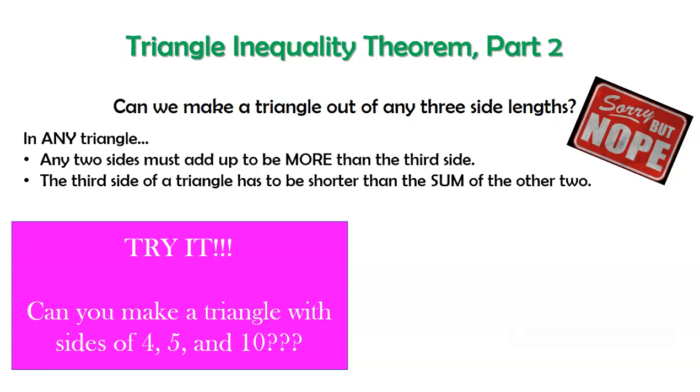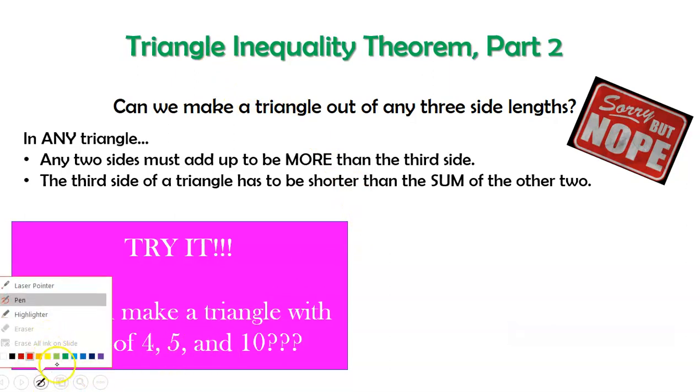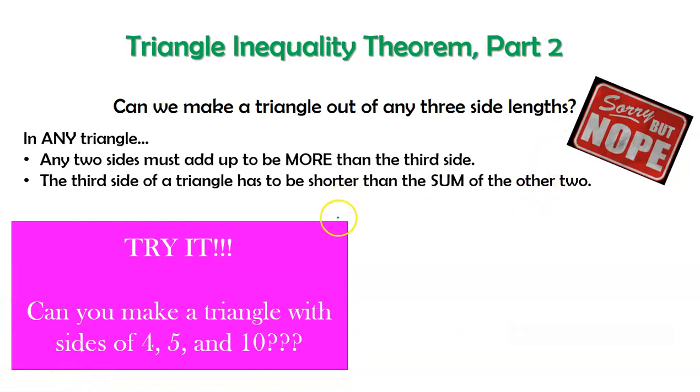Alright so let's try it. Any two sides right? Not just one particular pair, any two sides. I have 4, 5, and 10. If I take 10 and 5 and I add them up I get 15 and that is bigger than my third side which is 4. Awesome. Same thing if I add 10 and 4. I get 14 and that's bigger than 5. If I take 4 and 5 and add them up I get 9 and 9 is not bigger than 10.